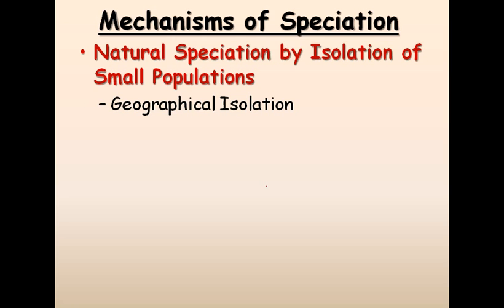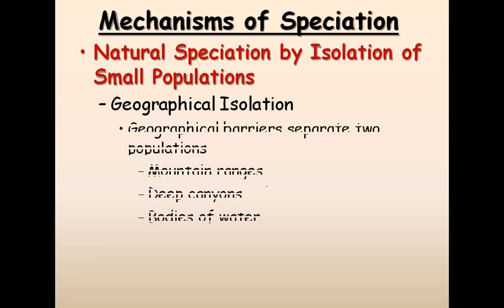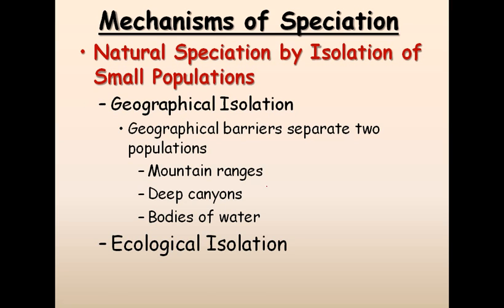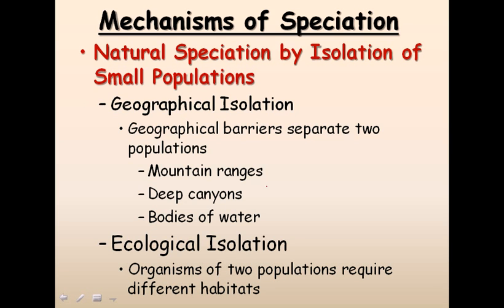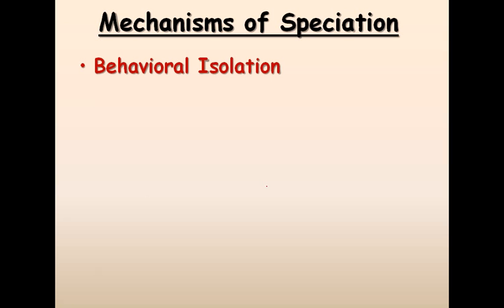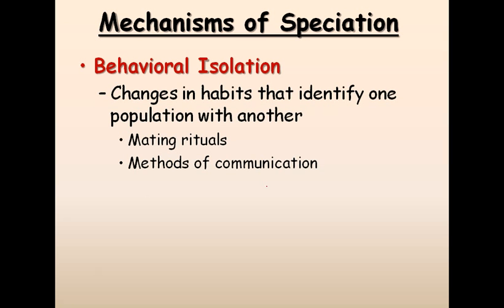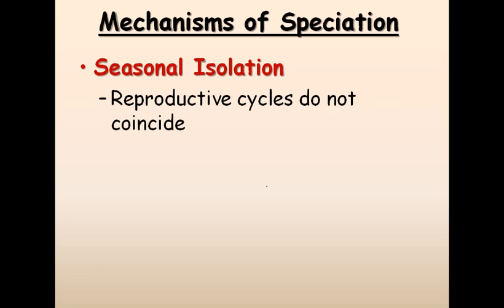Natural speciation through isolation of small populations can also happen. Geographical isolation means any geographical barriers — like mountain ranges, deep canyons, or bodies of water — separate two populations. Ecological isolation occurs when organisms of two populations require different habitats, so they never interact or reproduce with each other. Behavioral isolation involves changes in habits, like mating rituals — for example, courtship behaviors of birds or fish can vary, as can methods of communication.